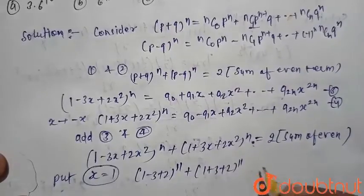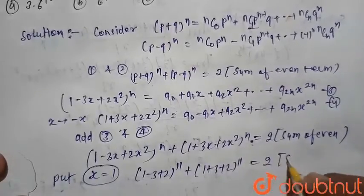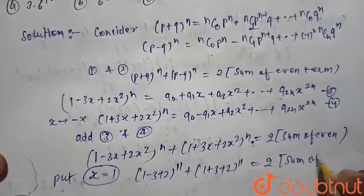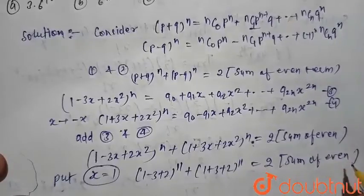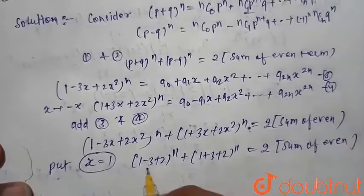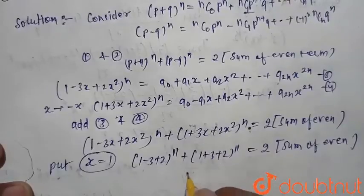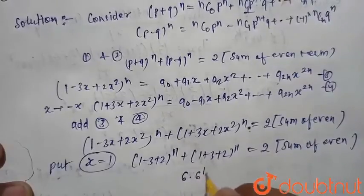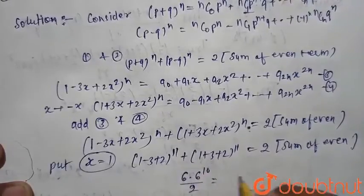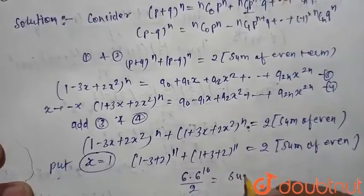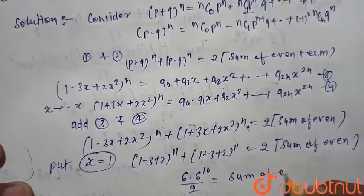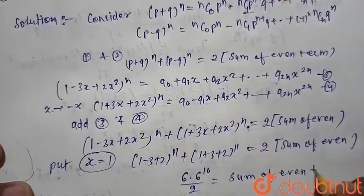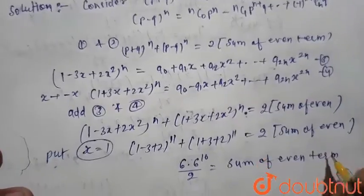This equals 2 times the sum of even terms. So: 6^11 = 2 × (sum of even terms). We write 6^11 as 6 × 6^10, so the sum of even terms = (6 × 6^10) / 2.